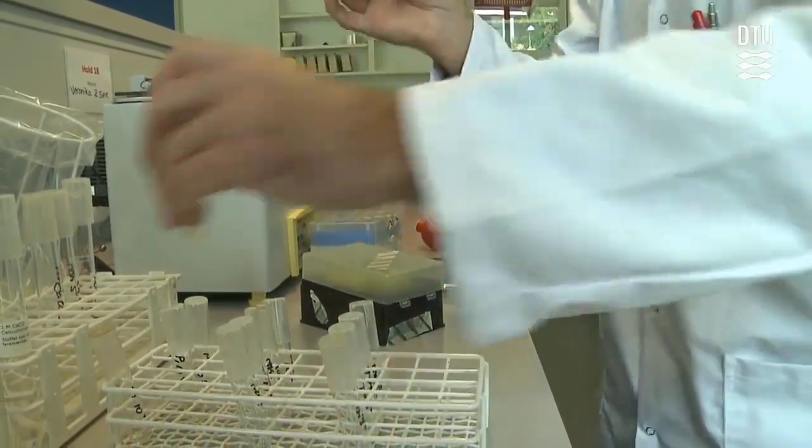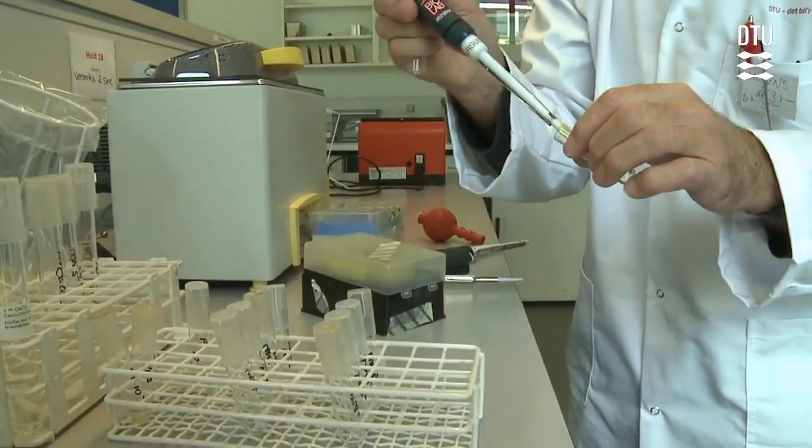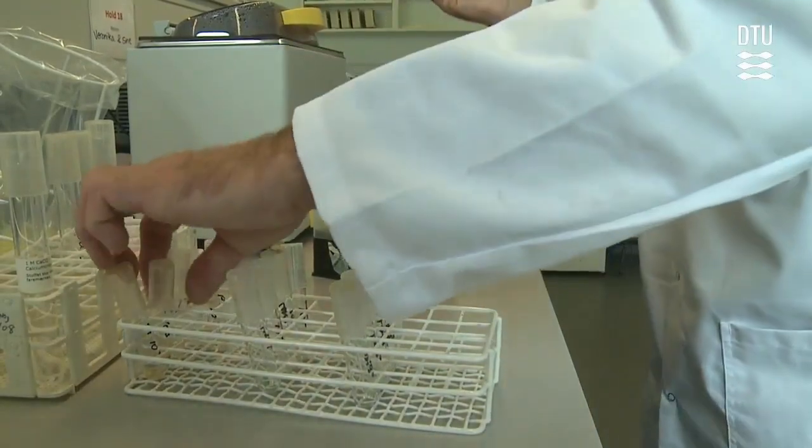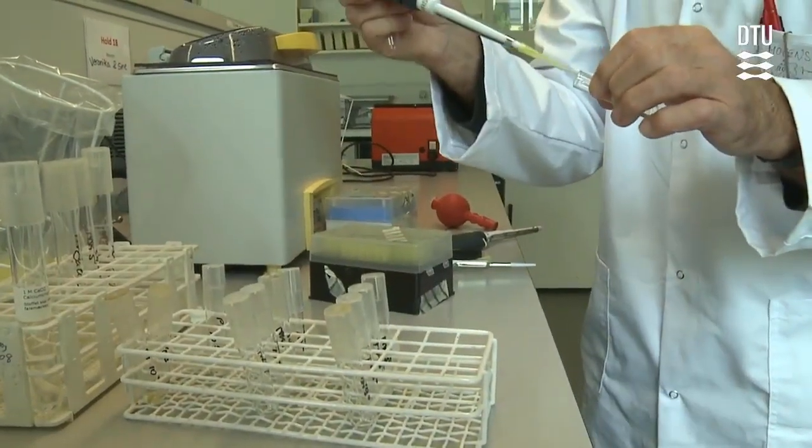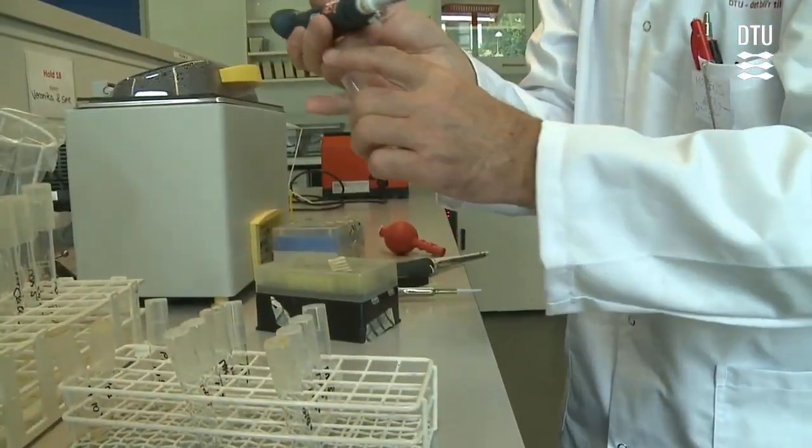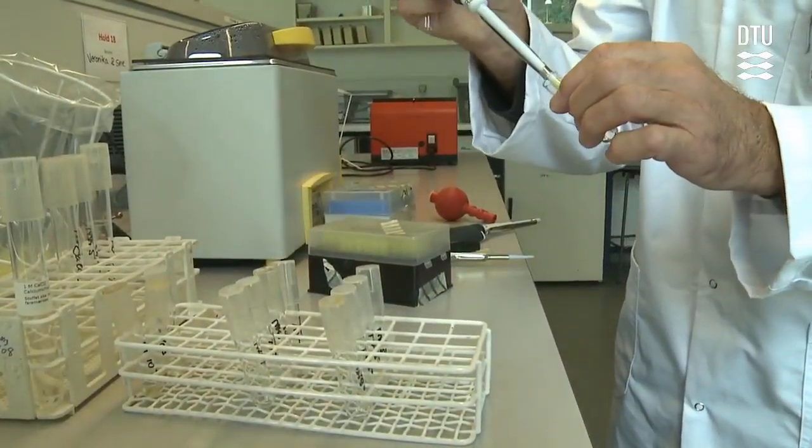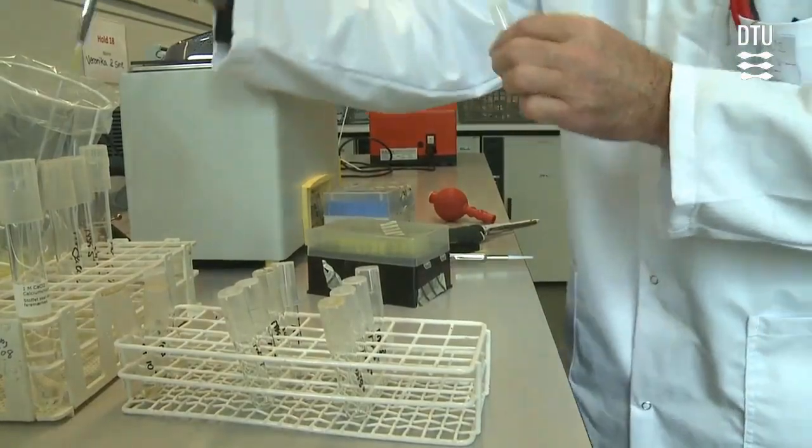Take 110 microliters from the 10 to the third and add it to the next one. It will now be 10 to the fourth. You add 110 microliters from the 10 to the fourth and add it to the last one, which will then be 10 to the fifth dilution.